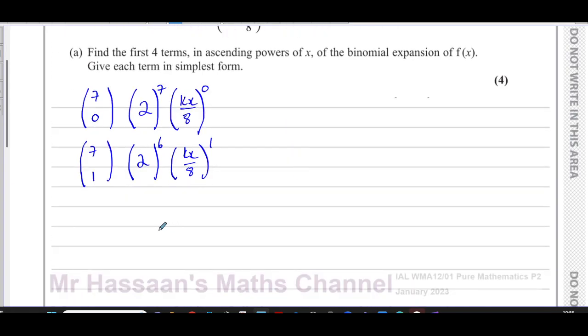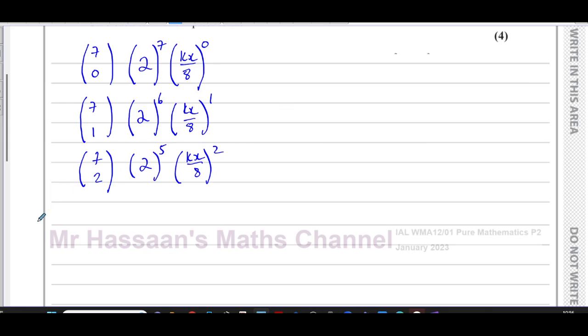And then for the next term, which is going to be the third term, would be 7c2. And this is going to be decreasing still, so that's to the power of five, and this is going to be increasing. So there's kx over eight to the power of two. And then finally, because we only want the first four terms, we can put 7c3, and this is two to the power of four, it's going down. And here you've got kx over eight to the power of three.